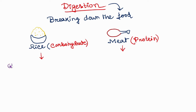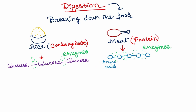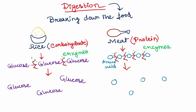Carbohydrates are made up of glucose molecules. Glucose molecules bind to each other to make carbohydrate, and proteins are made up of different types of amino acids. Different amino acids bind to each other to form a protein. The function of digestion is to break the bonds between the small molecules. To break the bonds, some enzymes or acids are applied, and these enzymes can break the bonds between the smaller molecules. After digestion, the carbohydrate releases glucose molecules and the protein releases amino acids.